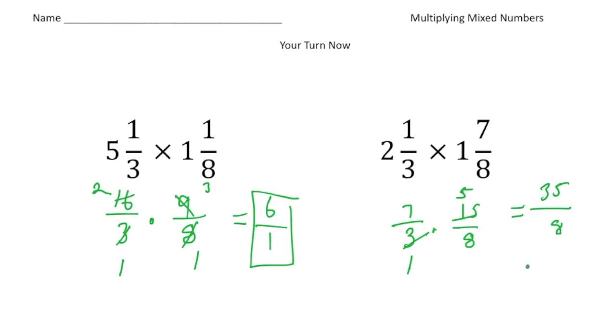But if I wanted to convert that into a mixed number, well I know 8 can go into 35, 4 whole times, with a remainder of 3. So it's going to be 4 and 3 eighths. And there's your answer.